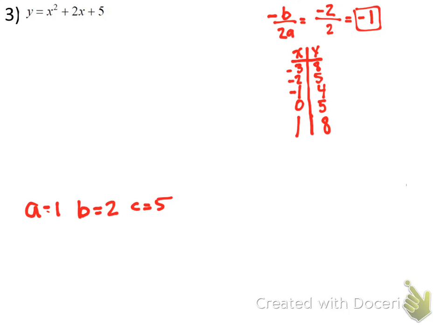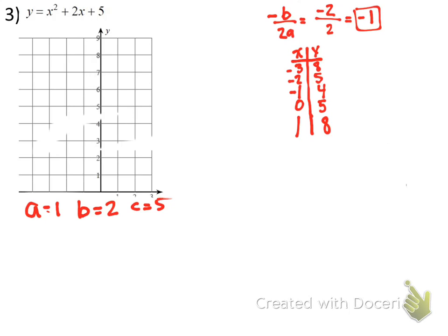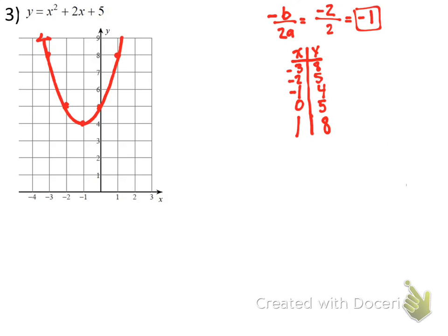Next step: take these as ordered pairs and graph them on graph paper. Plot: negative 1, 4; then 0, 5; then 1, 8; and on the other side, negative 2, 5; and negative 3, 8. And that's it — you just graphed your first quadratic equation.